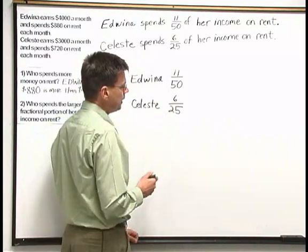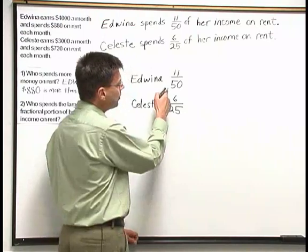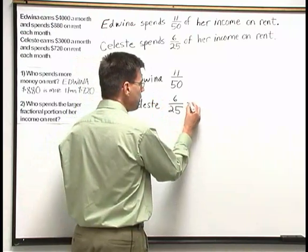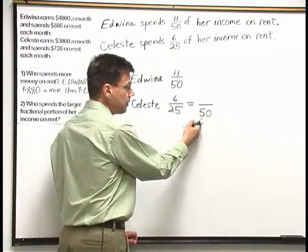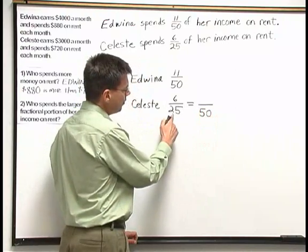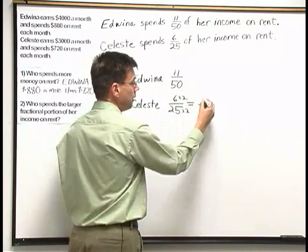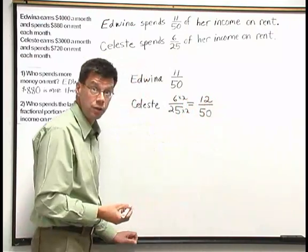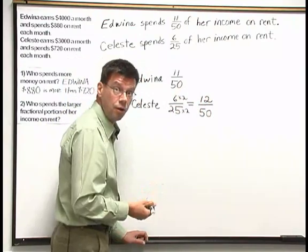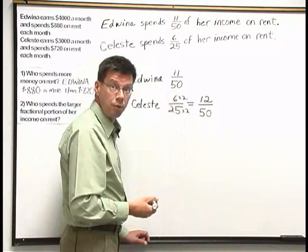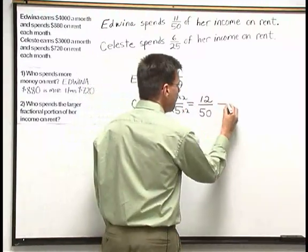Because 25 goes into 50 — since 25 times 2 is 50 — we can rewrite both fractions with denominator 50. We'll leave Edwina's fraction of 11 fiftieths alone, and raise terms on Celeste's fraction. Since 25 times 2 is 50, we take 6 times 2 to get 12 up above. So Celeste's fraction equals 12 fiftieths. Since 12 fiftieths is larger than 11 fiftieths, and when two fractions share the same denominator we compare numerators, 12 fiftieths is the larger fraction.